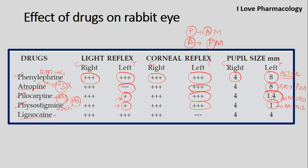With local anesthetic lignocaine, there is no action on light reflex — light reflex will be retained. However, the corneal reflex impulse that is generated will be lost. You will not see any corneal reflex when lignocaine is instilled into the test eye. Pupillary size will remain the same with lignocaine.